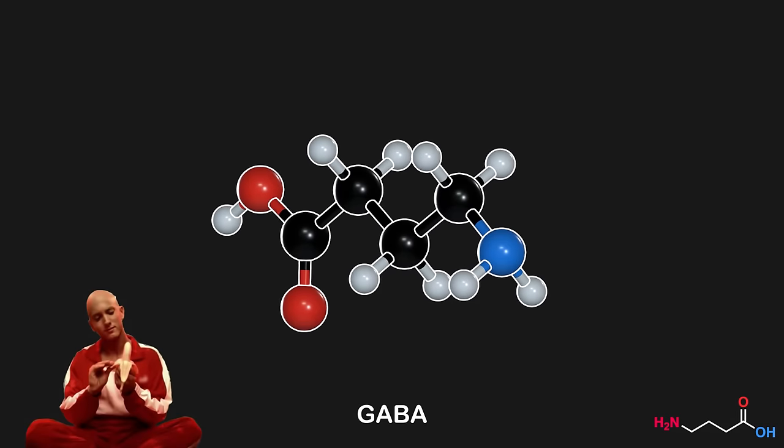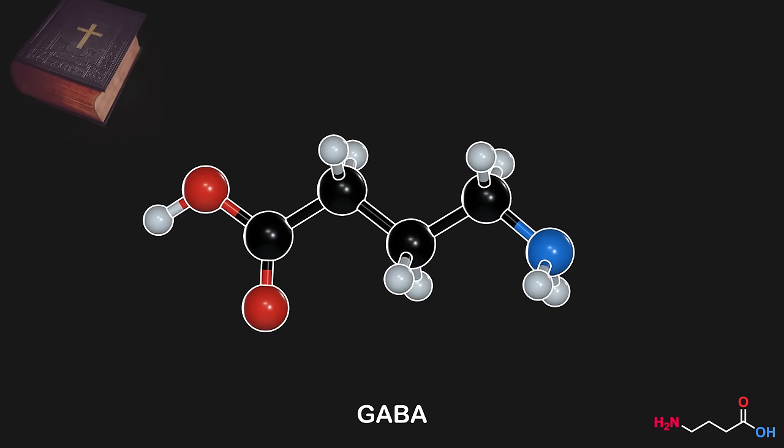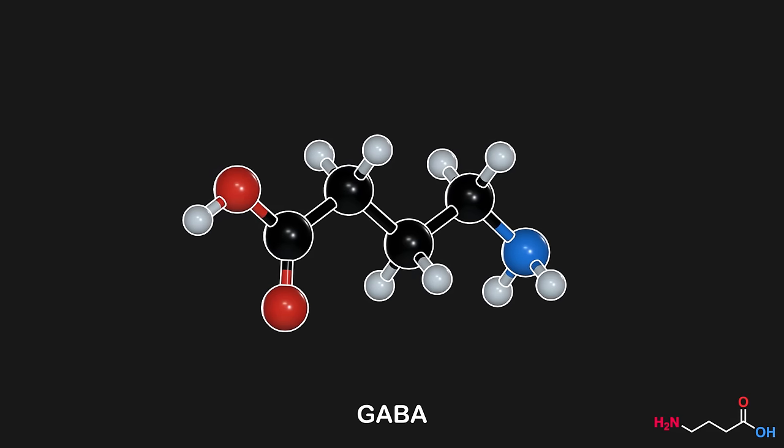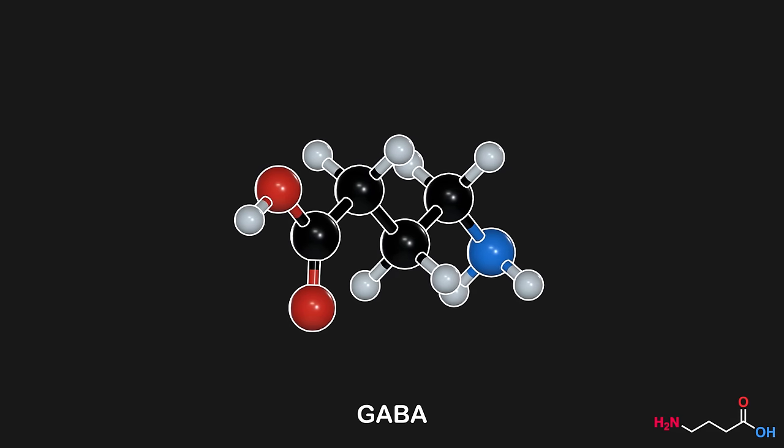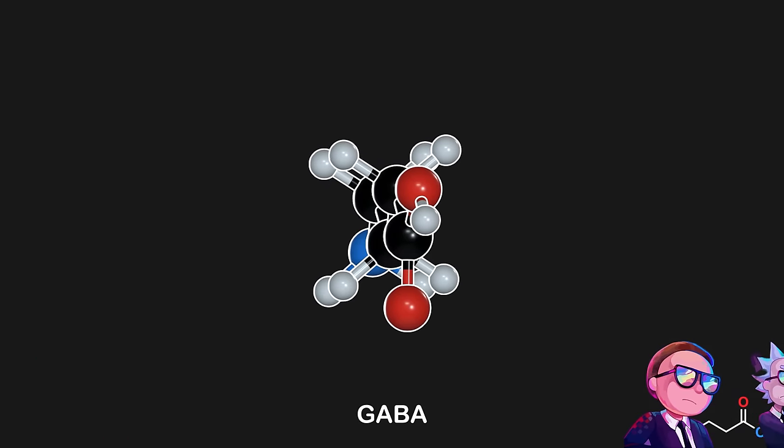Next we have GABA, the zen master of the neurotransmitters, keeping your brain calm, cool, and collected. As the proverbial brake pedal of the brain, gamma-aminobutyric acid, commonly known as GABA, works by facilitating the influx of chloride ions into the neuron, reducing the likelihood of neuronal firing, and thereby promoting relaxation, reducing stress, and facilitating sleep.